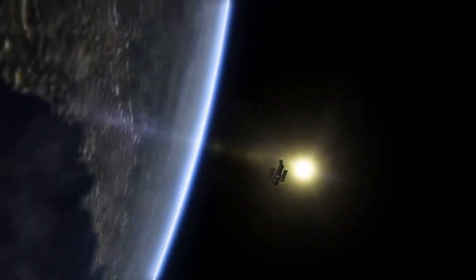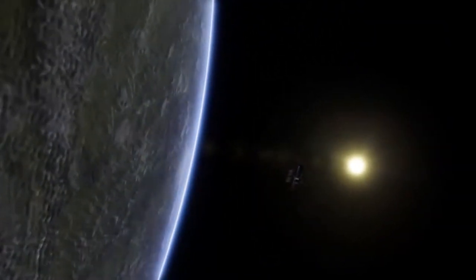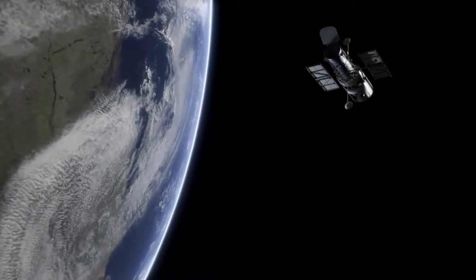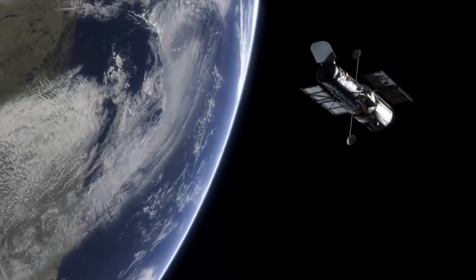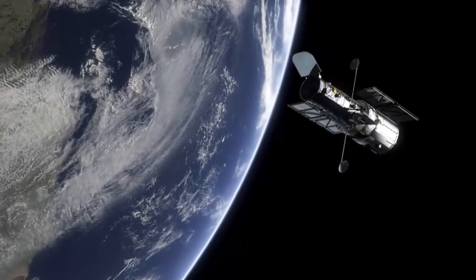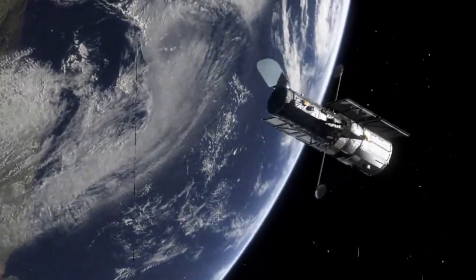Space is a hostile environment. Our planet shields us from the harshness of the cosmos, but space telescopes like Hubble spend their lives beyond Earth's shielding atmosphere. Such telescopes are carefully engineered to survive the hostility of space, but there is a danger zone where observations become almost impossible.